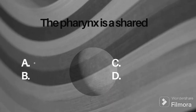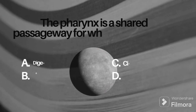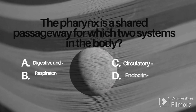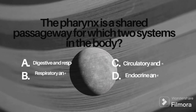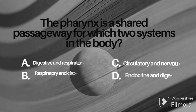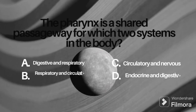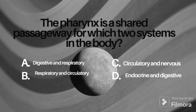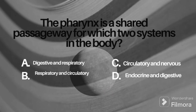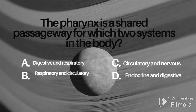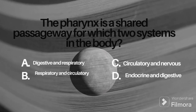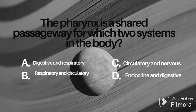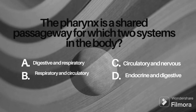Question 7: the pharynx is a shared passageway for which two systems in the body? Option A: digestive and respiratory, B: respiratory and circulatory, C: circulatory and nervous, D: endocrine and digestive.